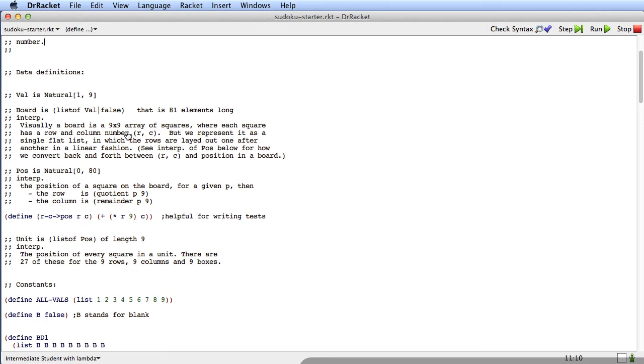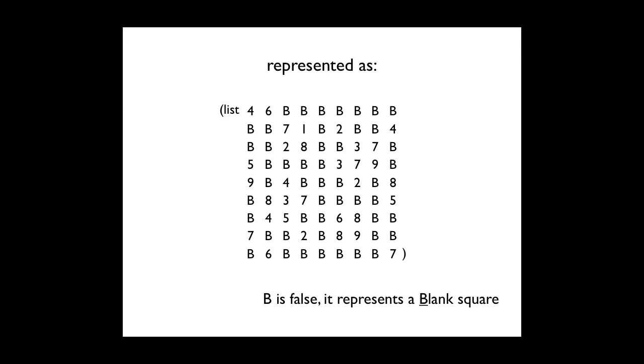Let's jump back to our illustration to understand this better. So what's going on is we've represented the board as a list 81 elements long. And you just take a list and just put line breaks in it every 9 elements. You can see how that looks like the board. There's the board.